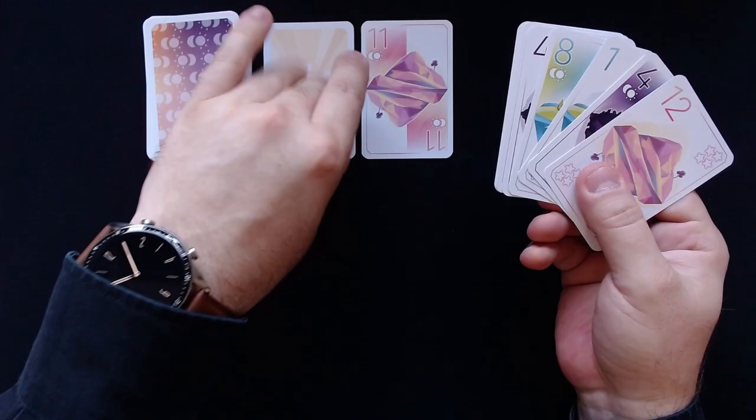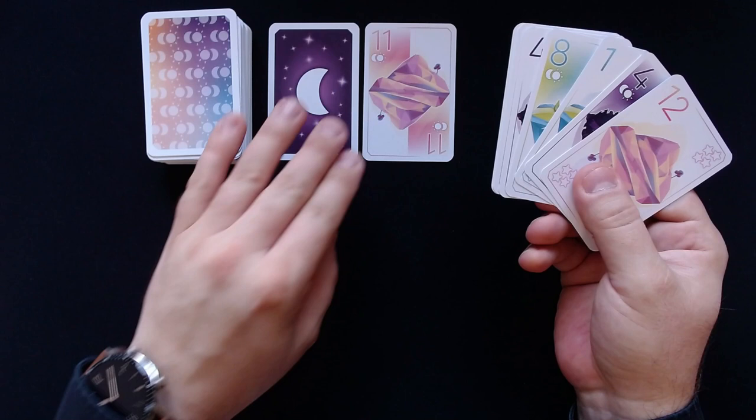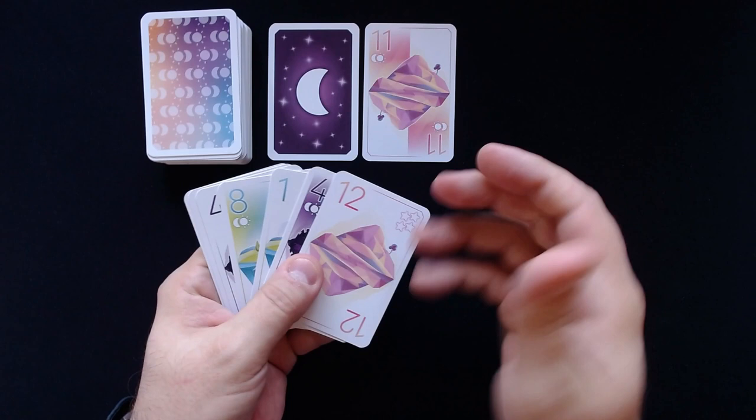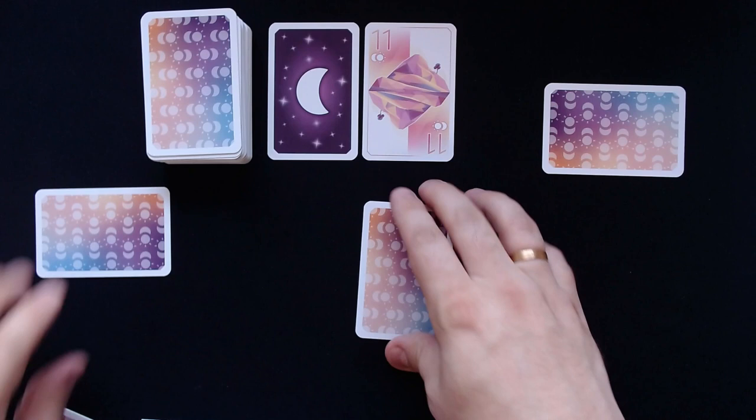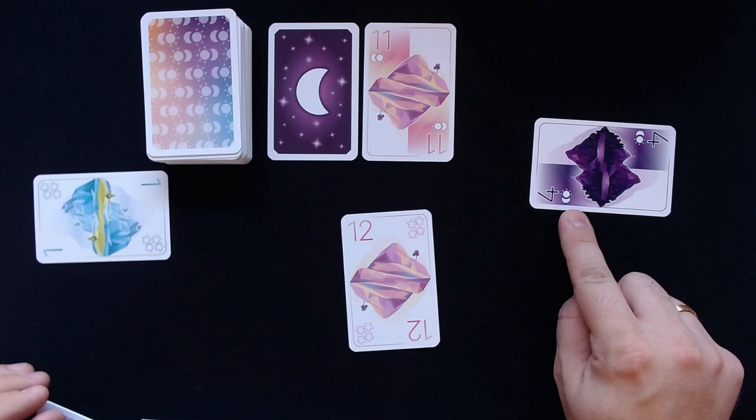Next, each player chooses one card from their hand and puts it in front of them face down. When all players have done so, they all then reveal the chosen cards simultaneously. For each revealed time symbol, the time card is flipped. So we have one time symbol altogether here, so we flip the card back to the sunny side.